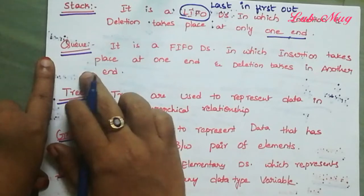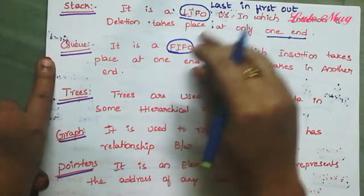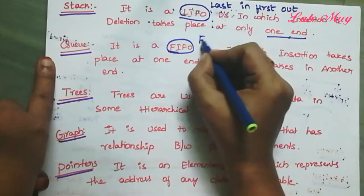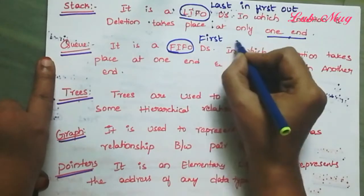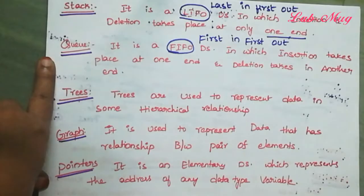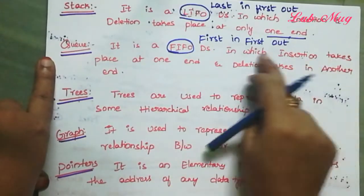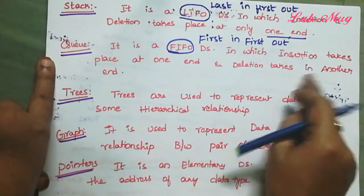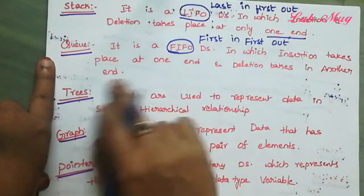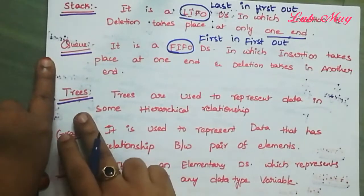Next is Queue. Queue is a linear data structure, but it follows FIFO — First In, First Out. The main operations are insertion and deletion. In a queue, insertion is performed at one end and deletion at the other end. Stack has only one end, whereas a queue has two ends.